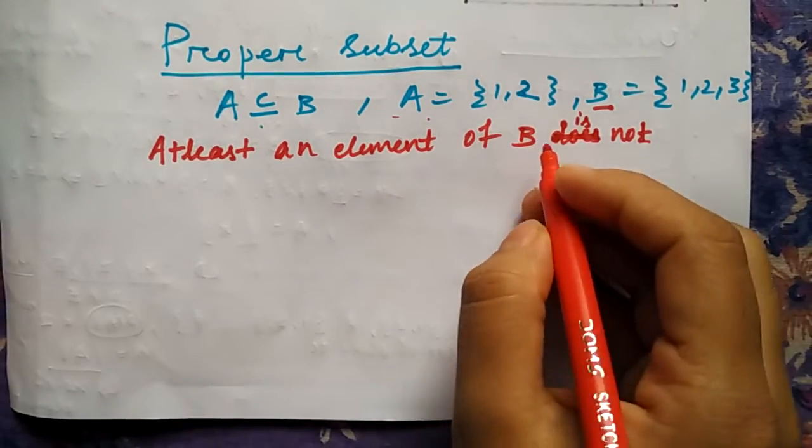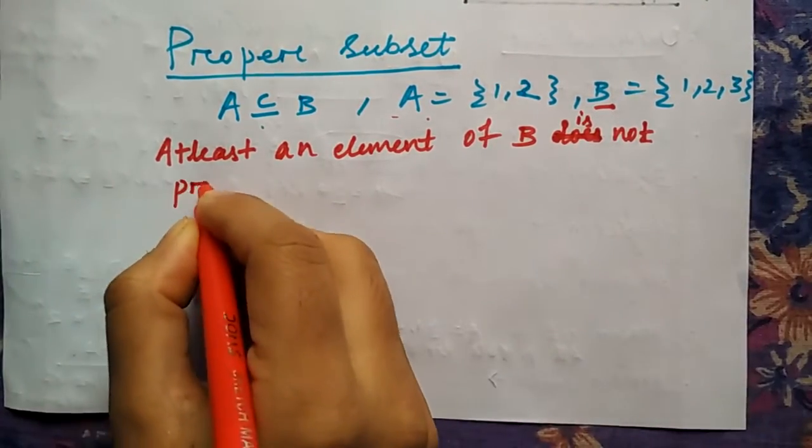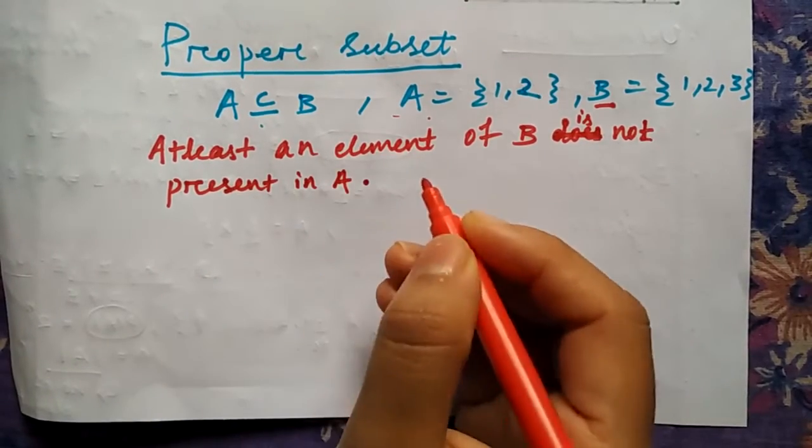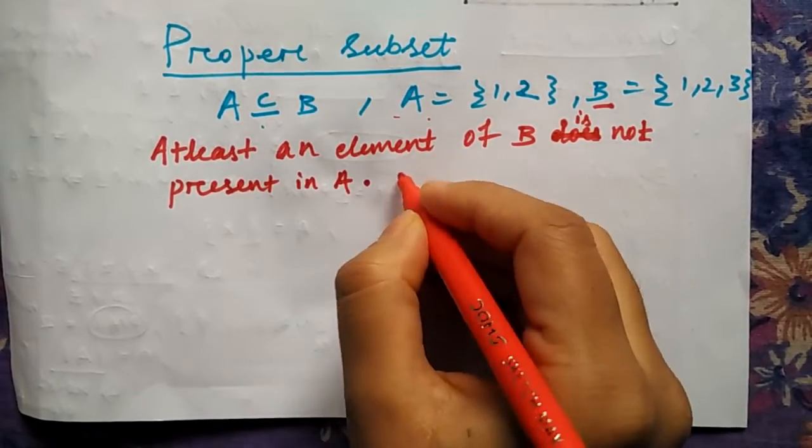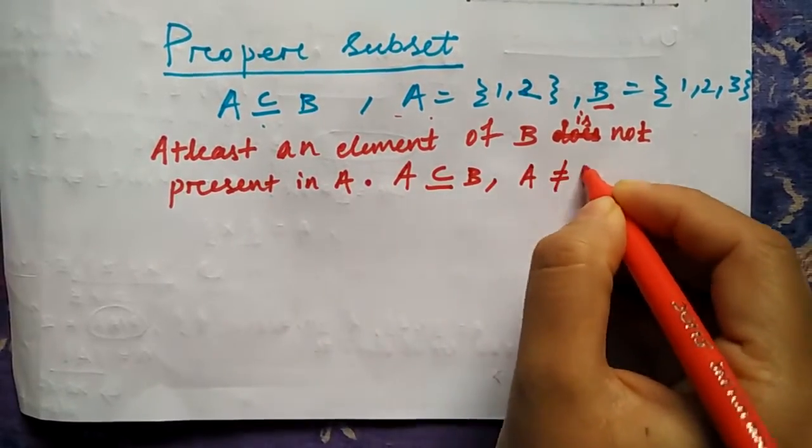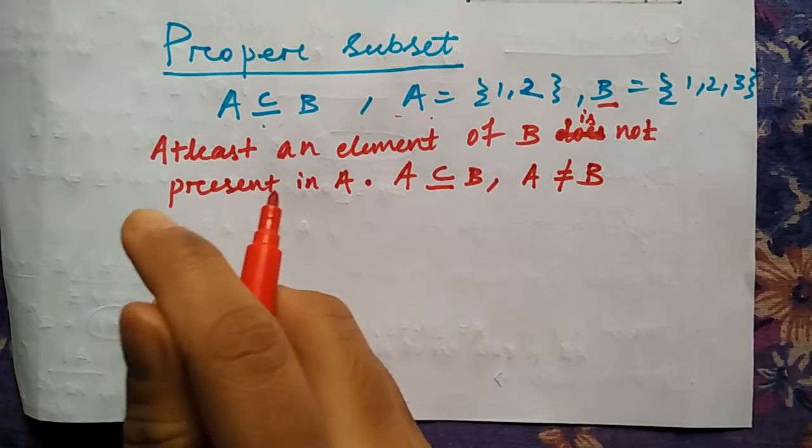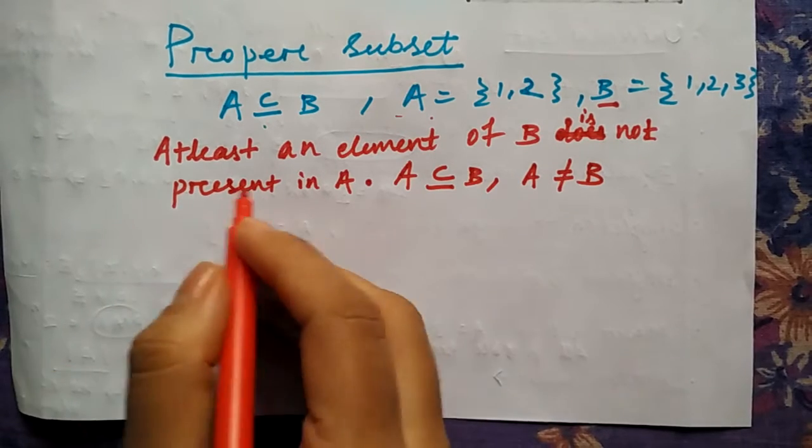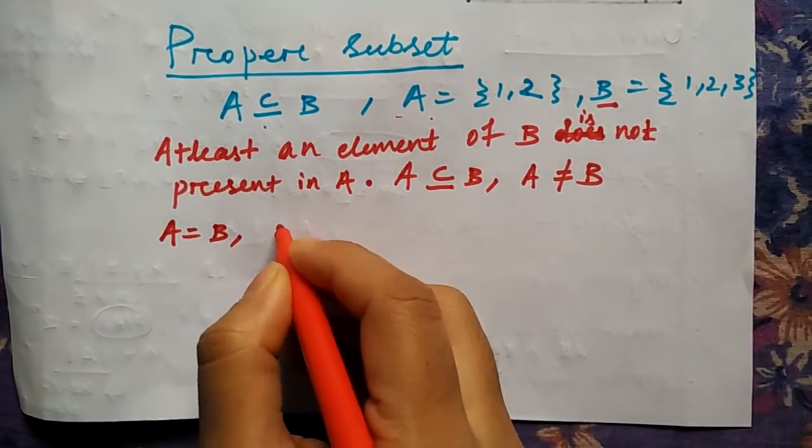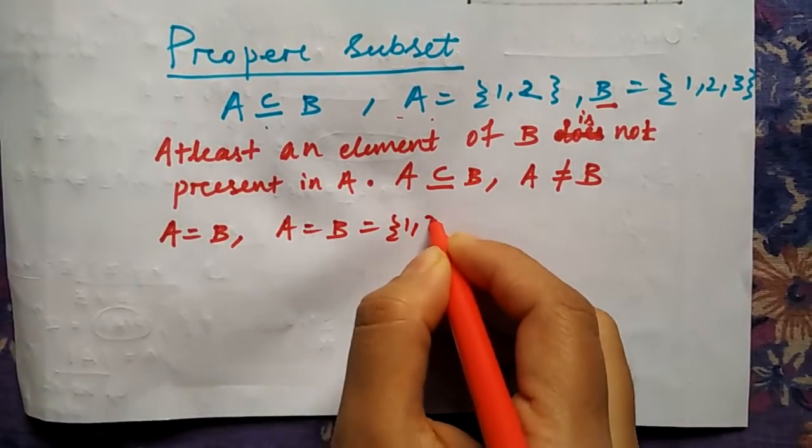At least an element of B is not present in A. So the symbolic term is A is the subset of B and A should not be equal to B. If two sets are equal, let me tell you one more thing.